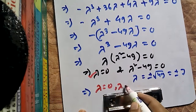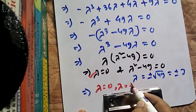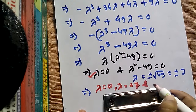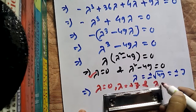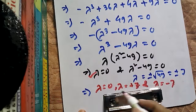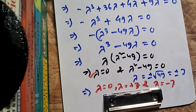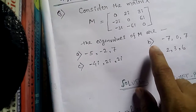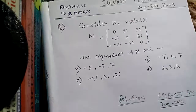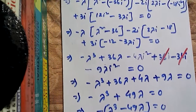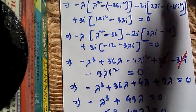So the three eigenvalues are lambda equals 0, lambda equals +7, and lambda equals -7. This matches with option B.